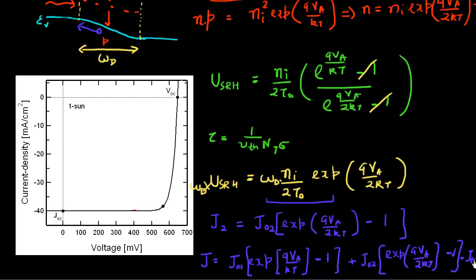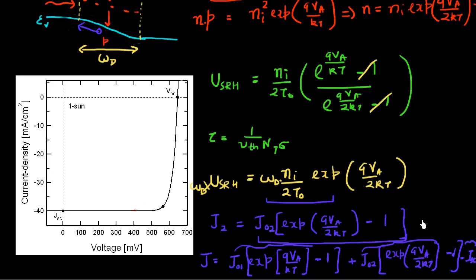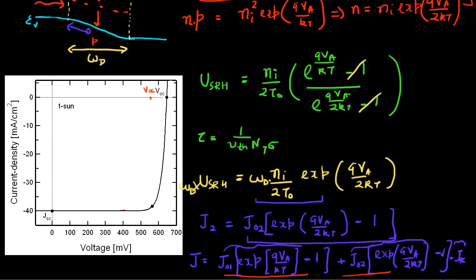Adding this SRH current to my diode IV characteristics, I notice that these two positive terms are now working together to compensate for JSC. For a given applied voltage, the first two terms produce a larger positive value trying to cancel JSC, so my VOC will essentially decrease. When the applied voltage equals zero, both the ideal and SRH terms become zero, so the overall current is still JSC. These represent my two endpoint values.